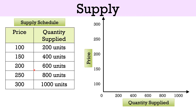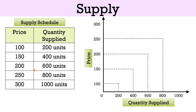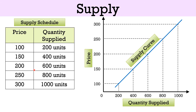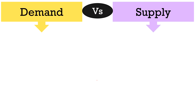Now we are going to plot this on a graph. When the price is 100 rupees, the quantity supplied is 200 units. When the price is 150 rupees, the quantity supplied is 400 units. When the price is 200 rupees, the quantity supplied is 600 units, and so on. When the price is high, the producer is willing to sell more, because higher prices encourage suppliers to produce more and earn more profit. Thus there is a positive or direct relationship between price and quantity supplied, and that is why the supply curve slopes upward from left to right. This is called the law of supply.